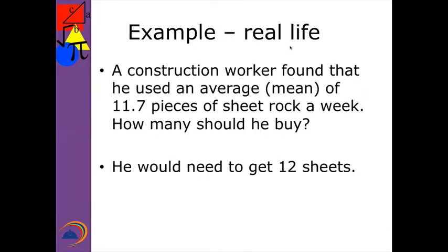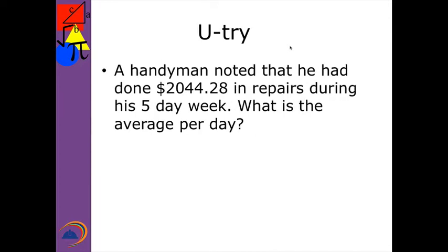Now here's a real life example. A construction worker found out that he used an average, or what we call in math the mean, of 11.7 pieces of sheet rock a week. How many should he buy? And the truth is when you go to Home Depot to buy sheet rock, you cannot buy parts of a piece. So he needed to get at least 12 sheets. Because it was just an average. If you said 12 sheets or more, you're also correct.